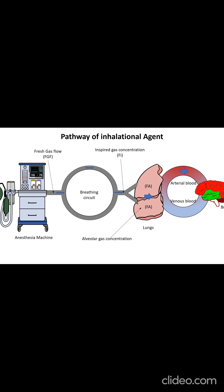In the alveoli, the anesthetic concentration — called alveolar gas concentration — creates a partial pressure that drives diffusion into the pulmonary capillary blood. The concentration of anesthetics in the blood is called arterial gas concentration. The anesthetic is then transported via the arterial blood to the brain, where the anesthetic effect is achieved when the partial pressure of the agent in the brain, blood, and lung equilibrates.